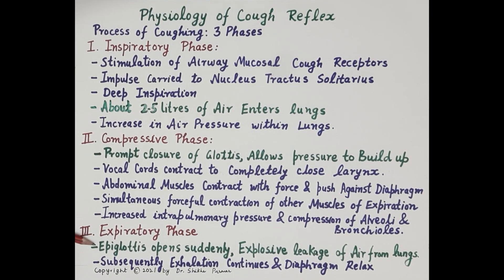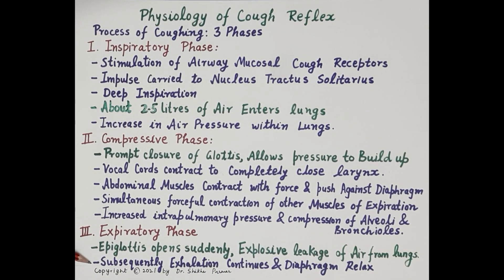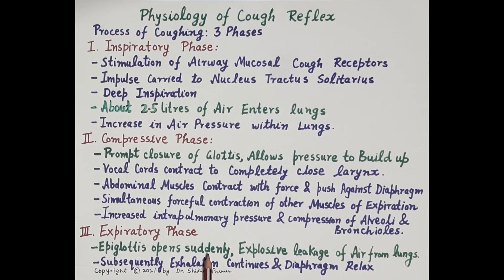In the expiratory phase, the epiglottis opens suddenly, causing explosive leakage of air from the lungs, which removes the irritants from the respiratory mucosa. Subsequently, there is continuation of exhalation and complete relaxation of the diaphragm. This explains the physiology of the cough reflex — the explosive leakage of air from the lungs and removal of irritants from the respiratory mucosa. If you find the video useful, kindly like, subscribe, and share.